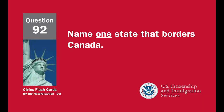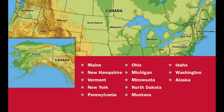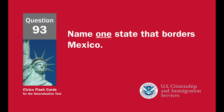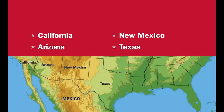Name one state that borders Canada. Maine, New Hampshire, Vermont, New York, Pennsylvania, Ohio, Michigan, Minnesota, North Dakota, Montana, Idaho, Washington, or Alaska. Name one state that borders Mexico. California, Arizona, New Mexico, or Texas.